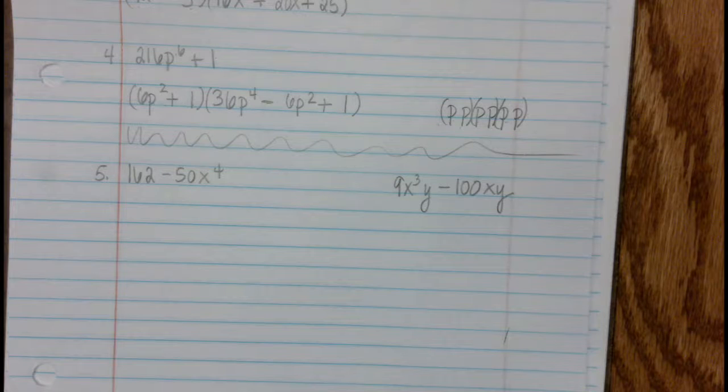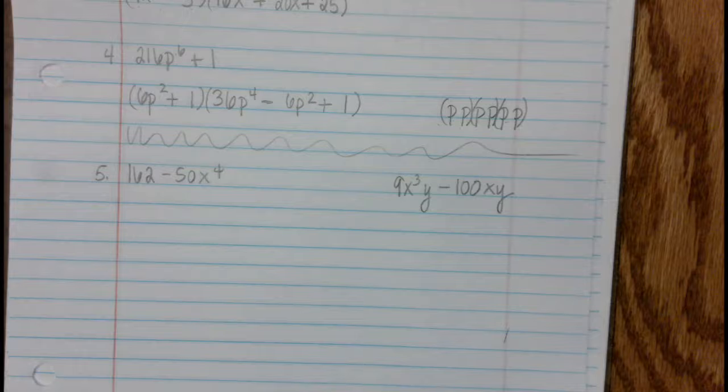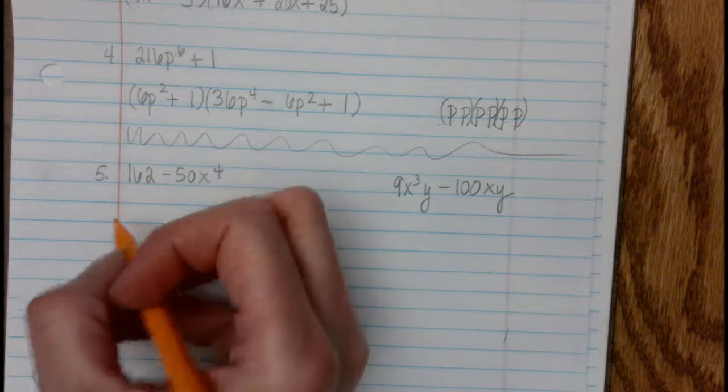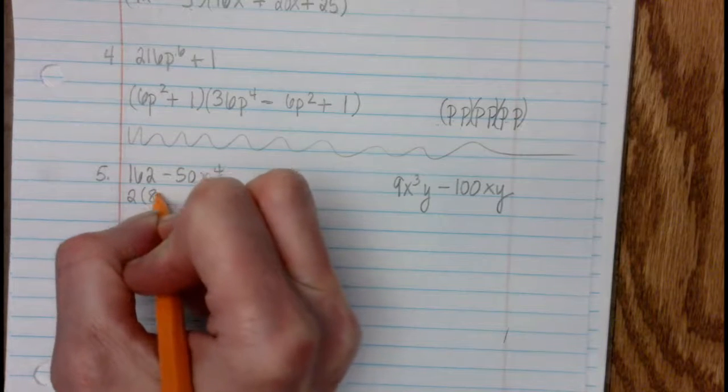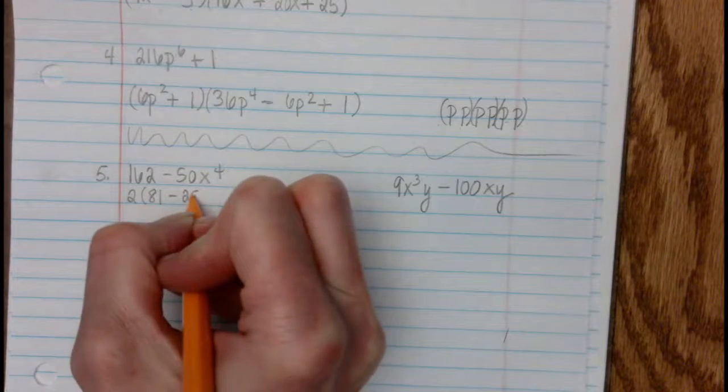We look for the greatest common factor, and what I notice is that 162 and 50 are even, so I'm going to factor out a 2, and when we do, we get 81 minus 25x to the 4th.